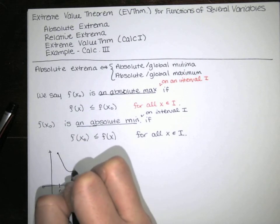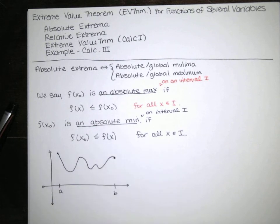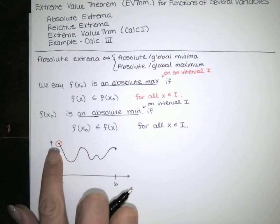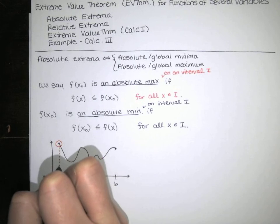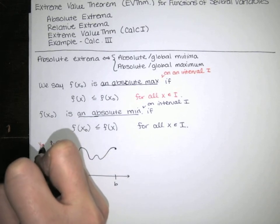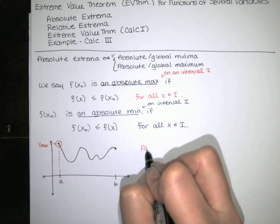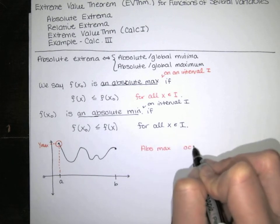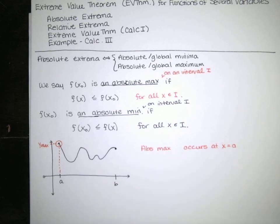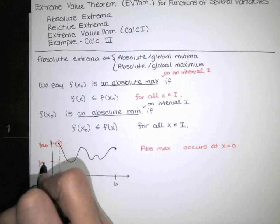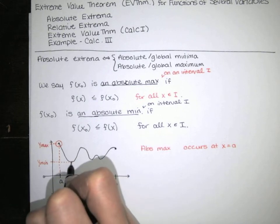Maybe our function looks like this. At x equals a, we've got the absolute max — that's the largest y value. The absolute maximum is the y value y_max, and it occurs at x equals a. It looks like we've got an absolute min as well — that looks like the smallest y value, y_min — and it occurs at x₁.